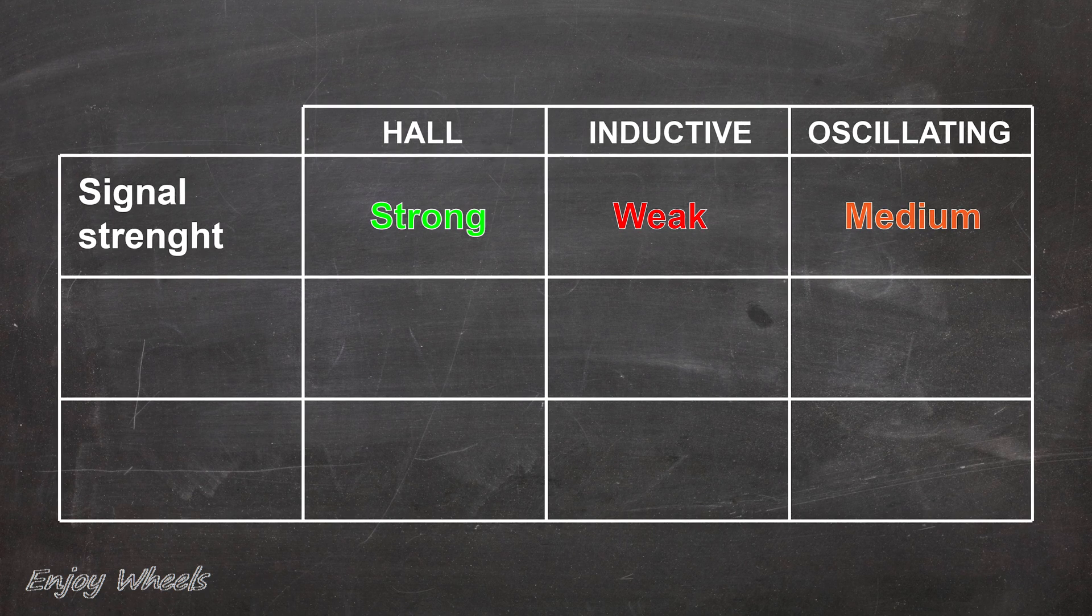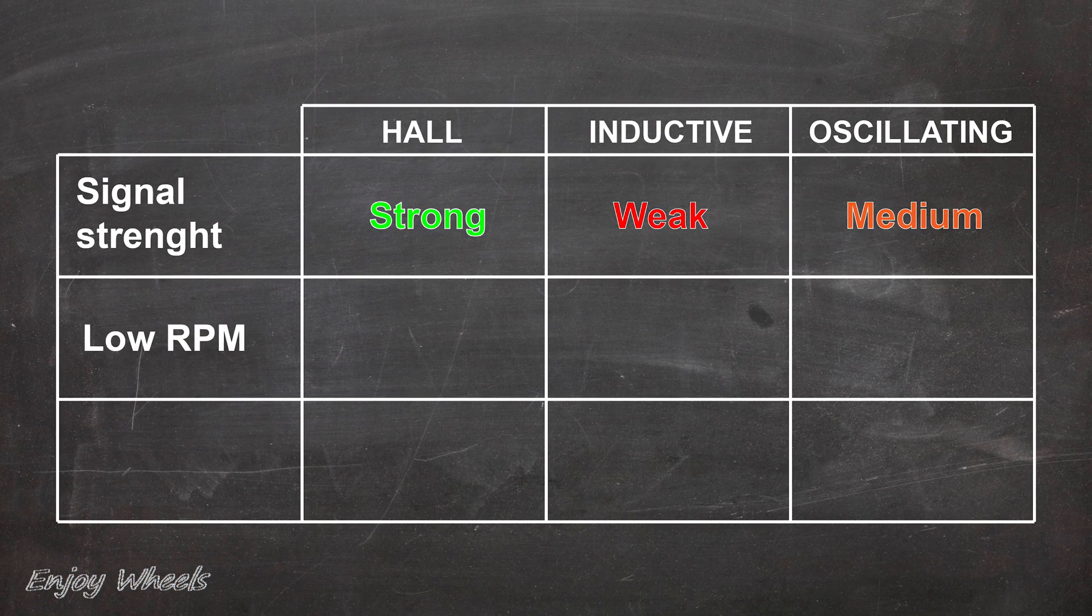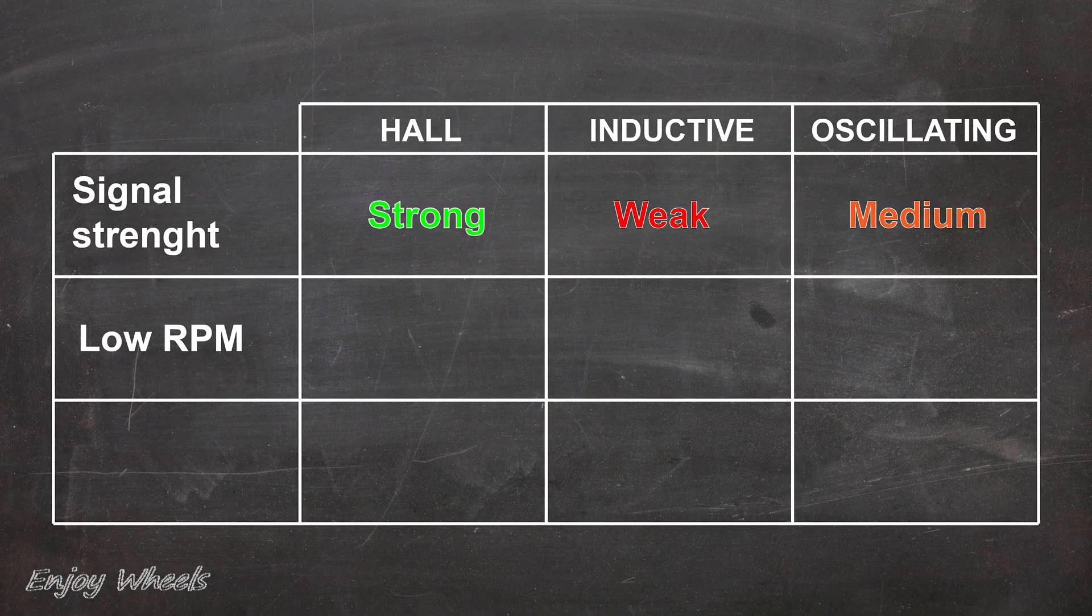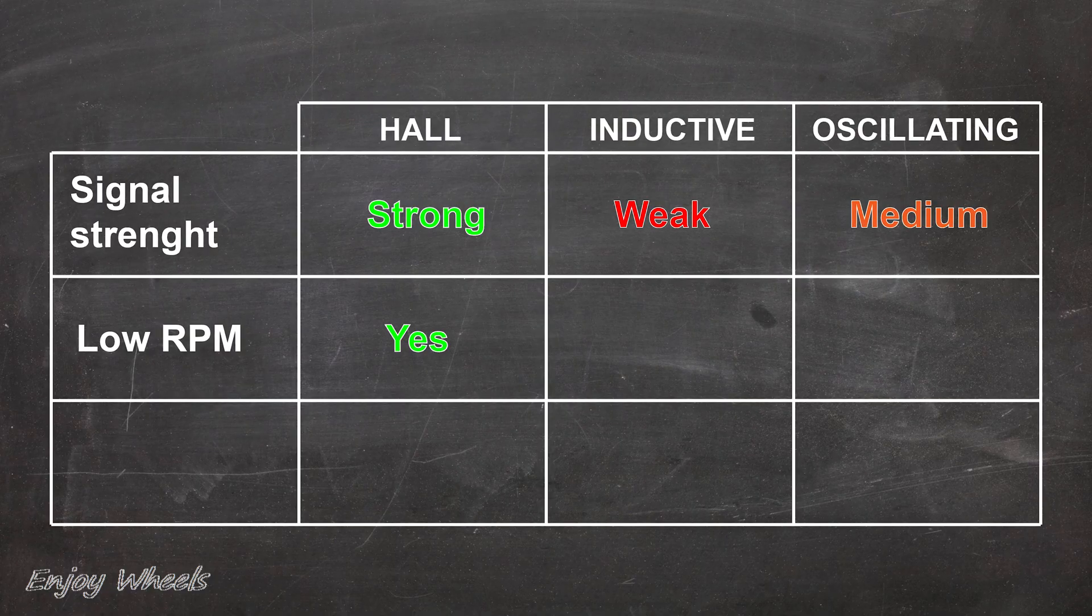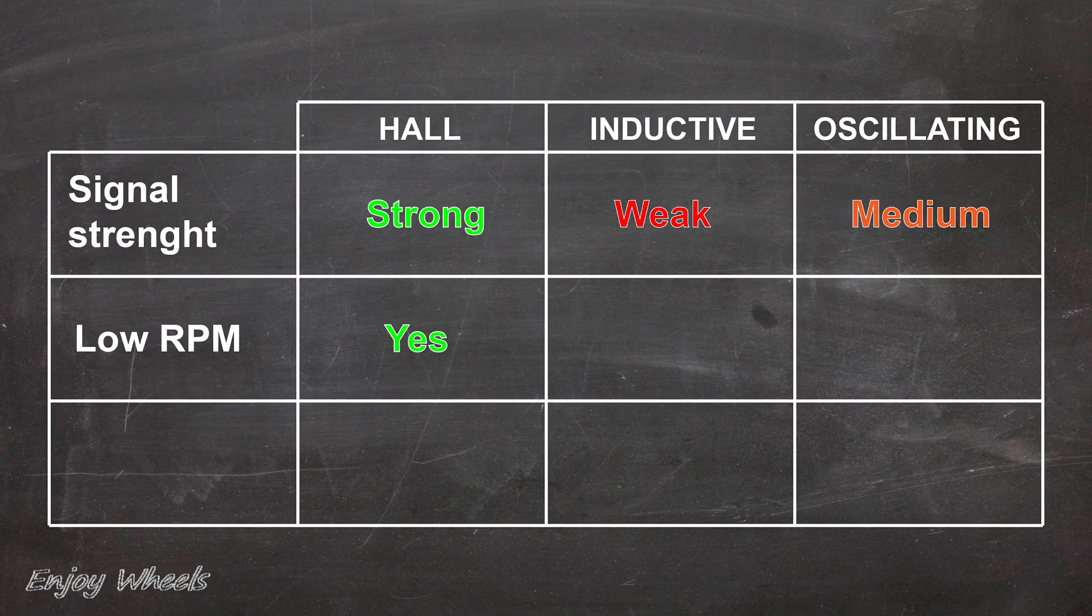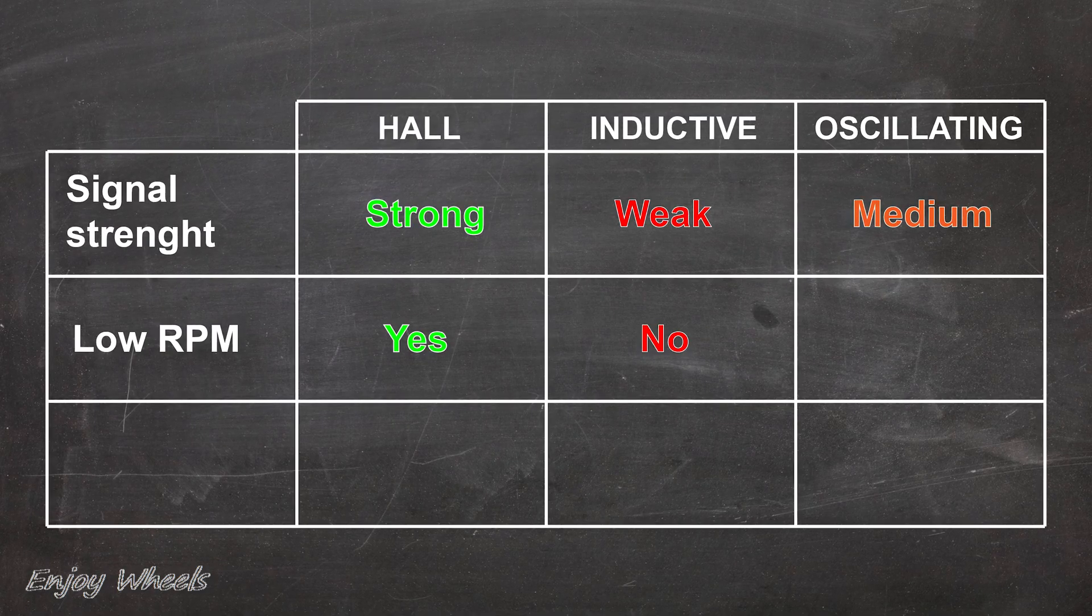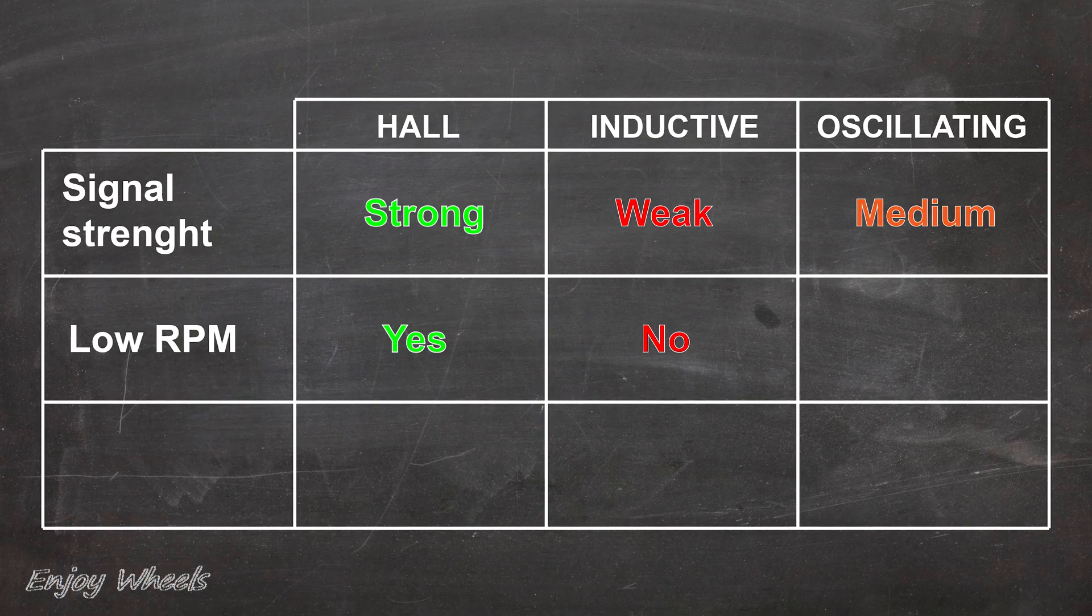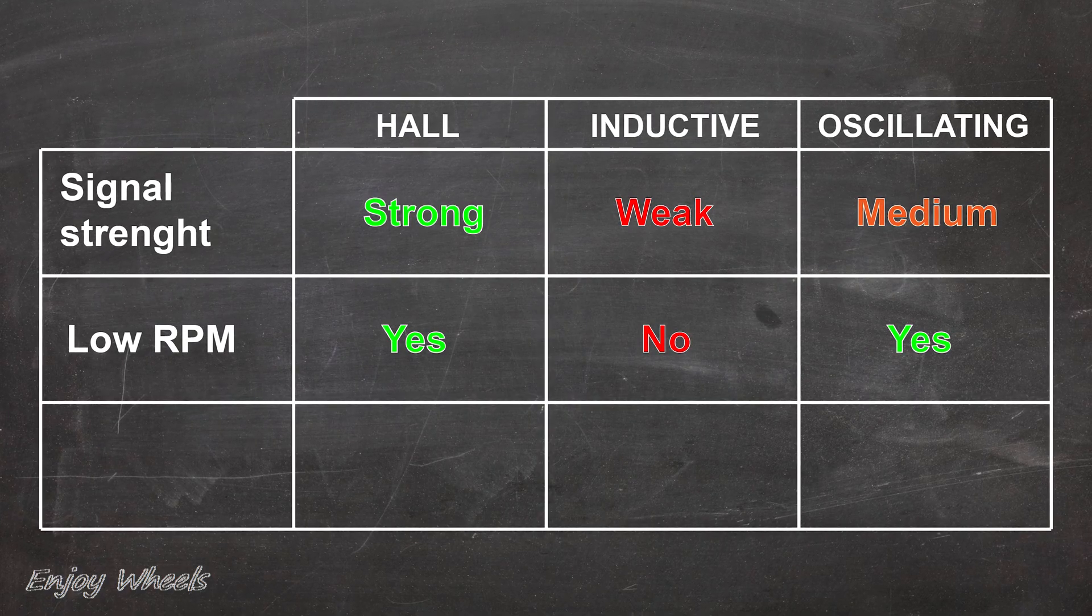Then, we will see if the sensor operates at very slow RPM or not. The Hall effect sensors can detect the presence of a tooth or not even when the engine is stopped, while the inductive sensor needs movement to generate the signal. This is a disadvantage, especially when starting the engine. And the oscillating inductive sensor is like the Hall effect sensor. No need for movement.